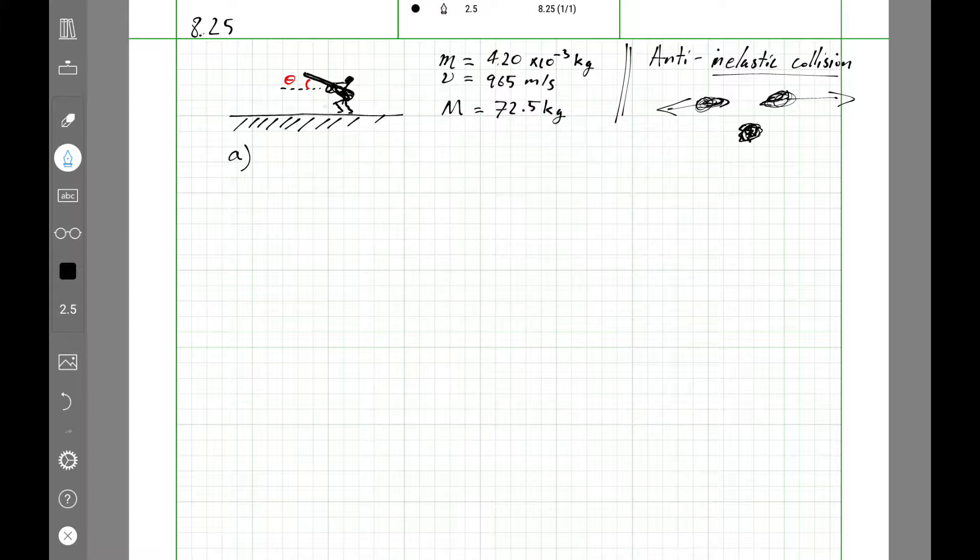In these types of problems, momentum is conserved. So momentum in the beginning, there's zero momentum. The total momentum is the momentum of the bullet plus the momentum of the hunter. And that's zero.